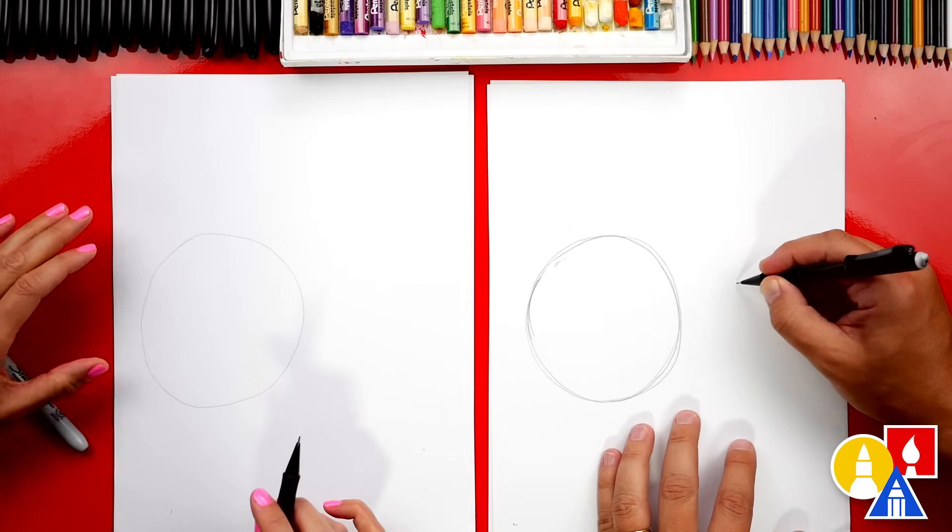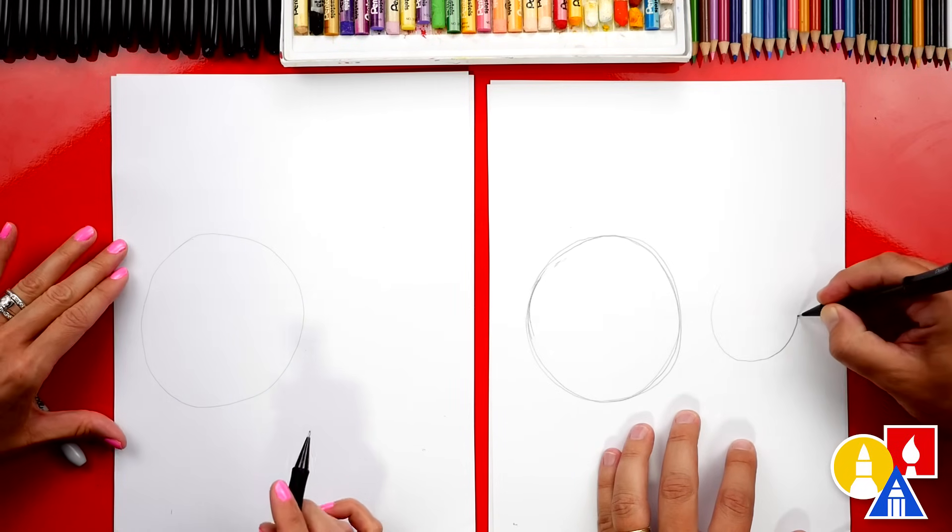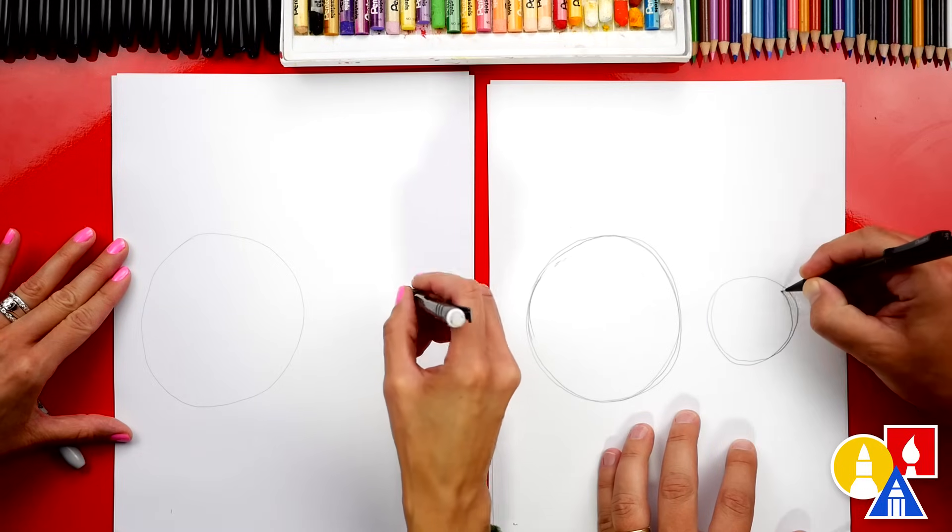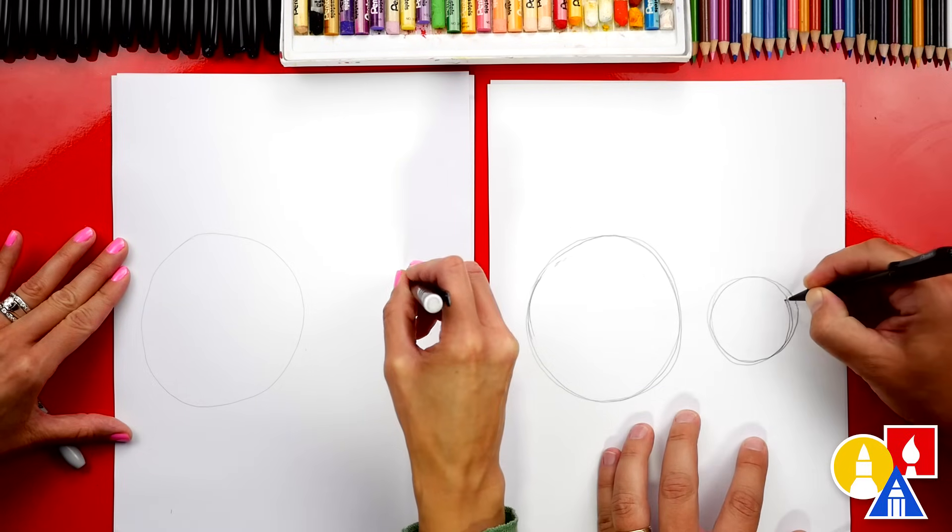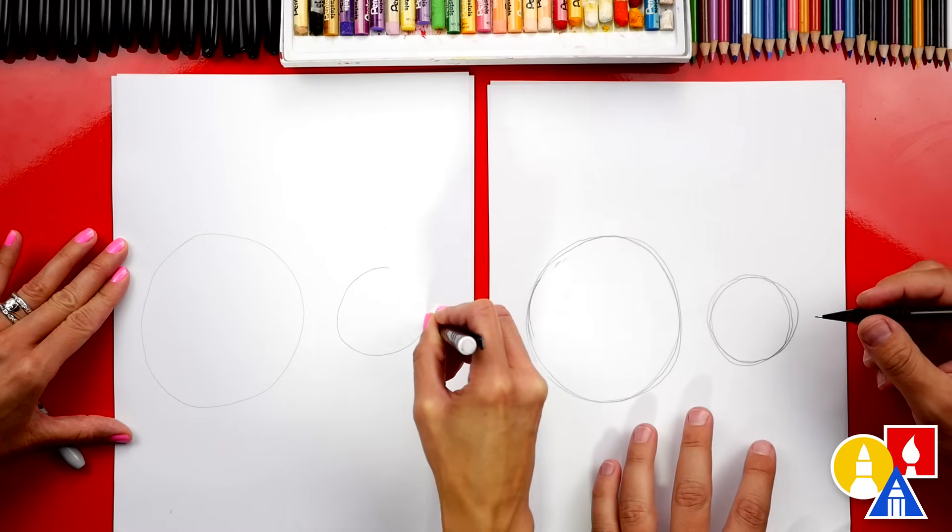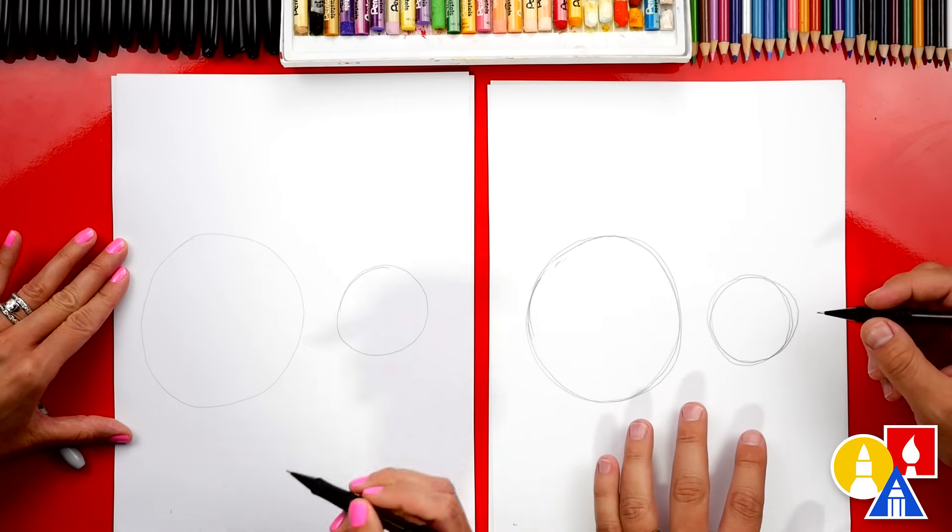Then over here on the right, let's draw another circle but smaller, maybe about this size. Yeah. I went over a couple times but that looks awesome. That's perfect.